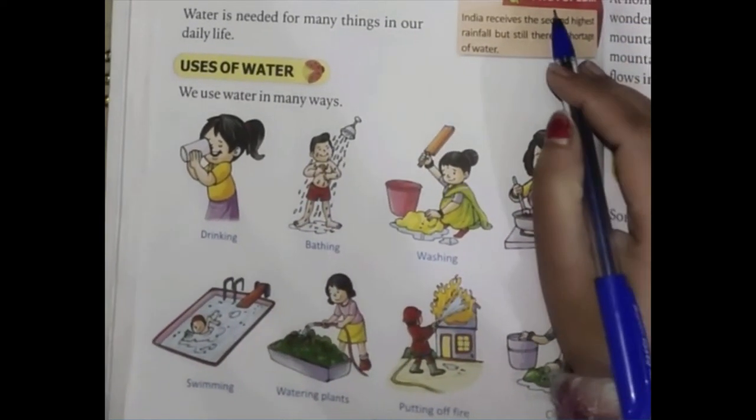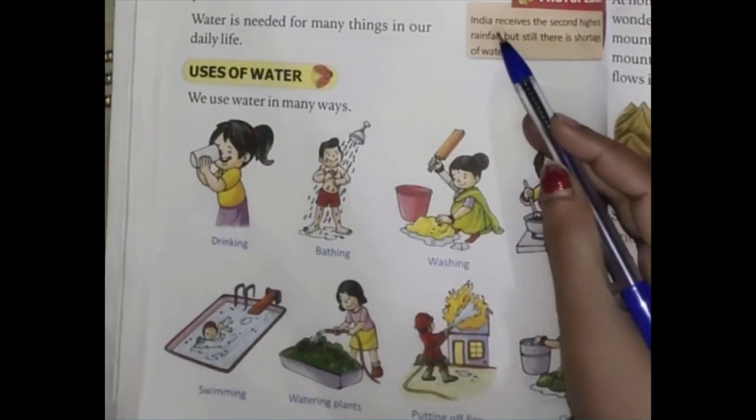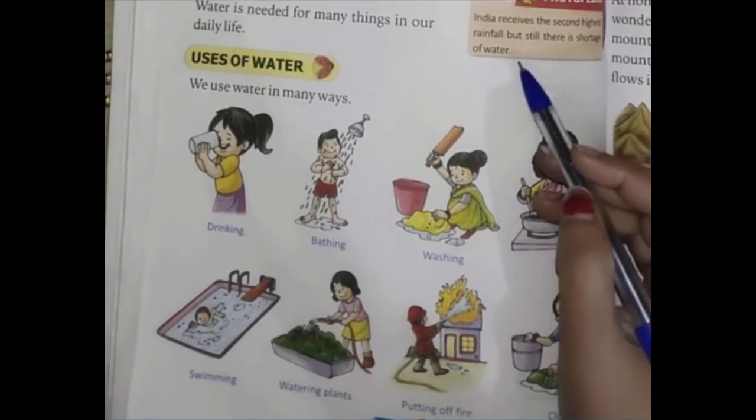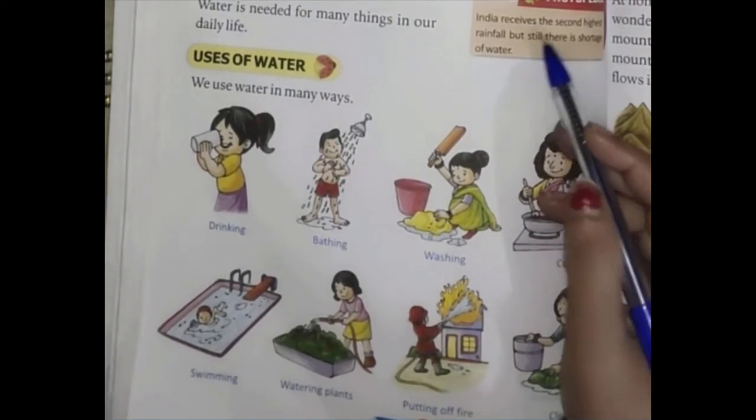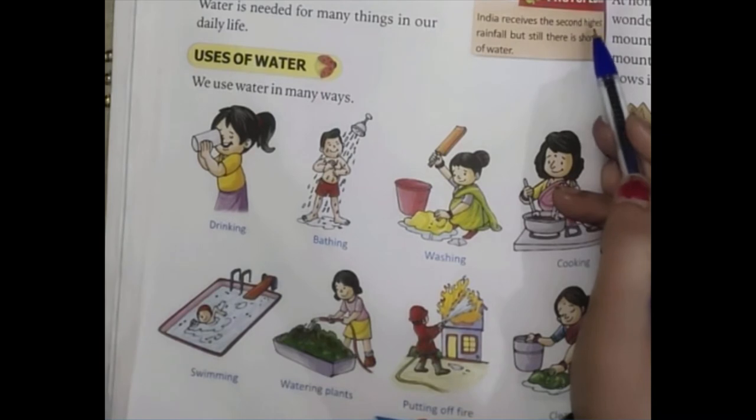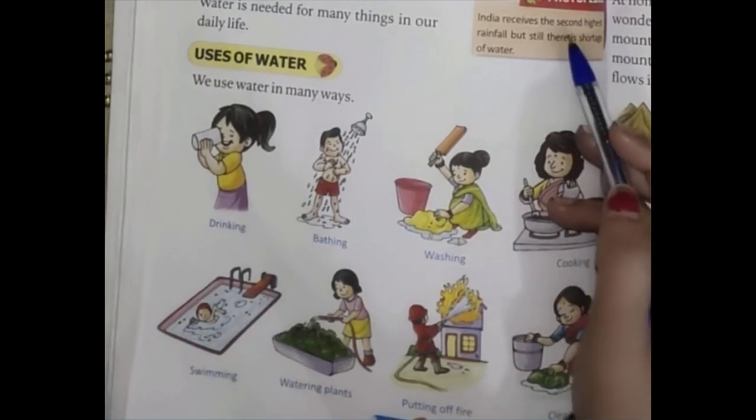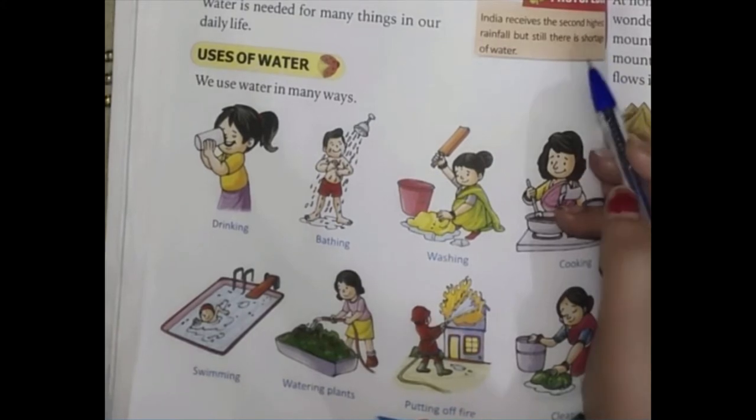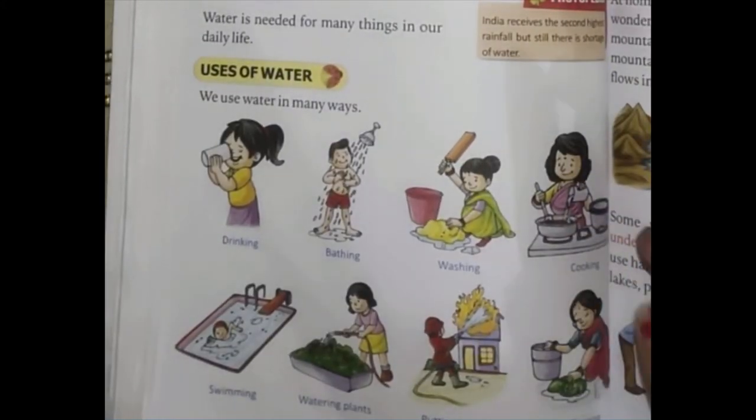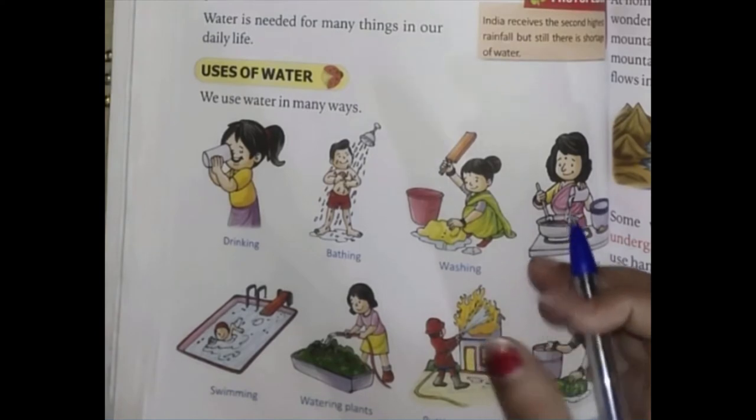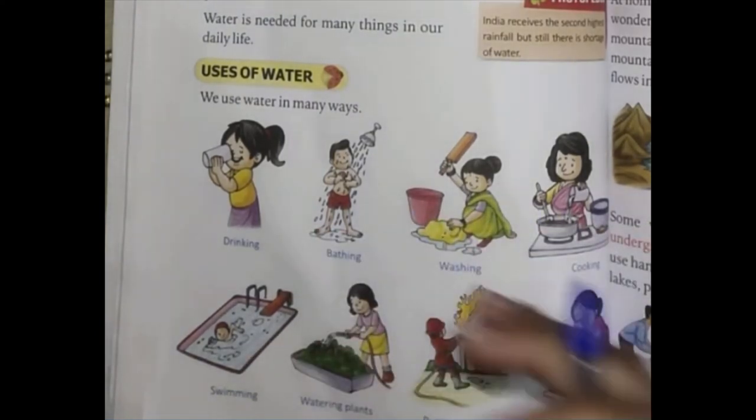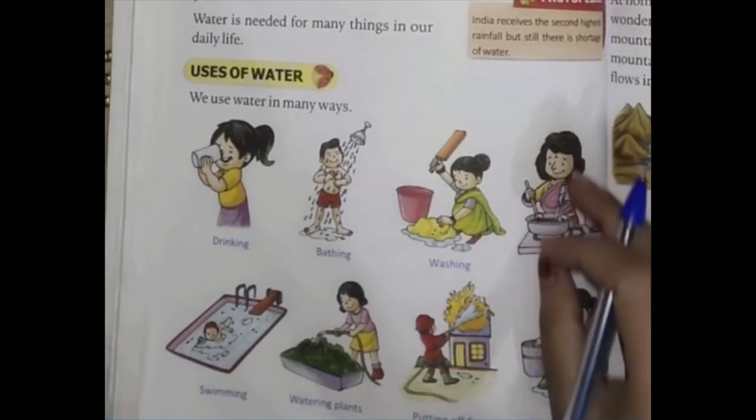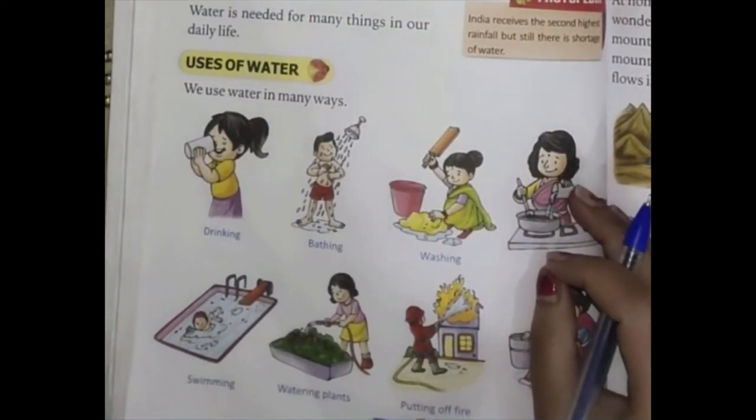Here is a factopedia. India receives the second highest rainfall but still there is a shortage of water because there is also waste of water.